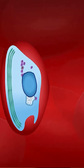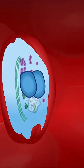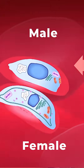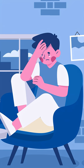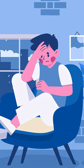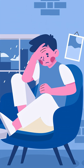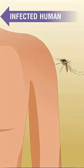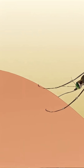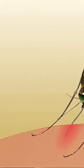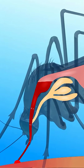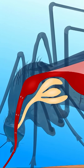Some merozoites inside the RBC develop into male and female gametocytes. These do not cause symptoms but are very crucial for transmission. When another mosquito bites the infected person, it picks up the gametocytes.